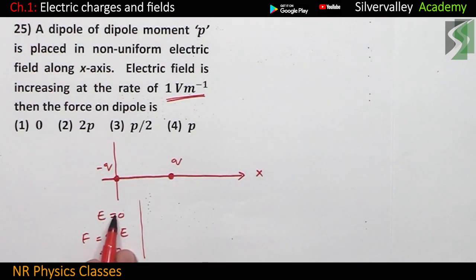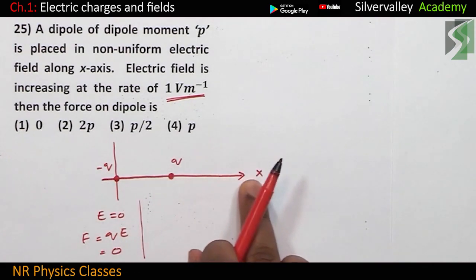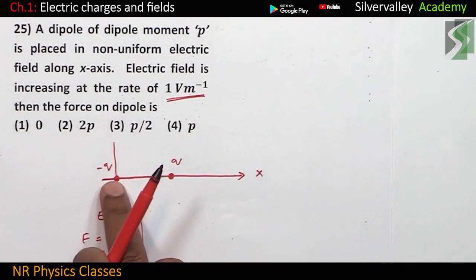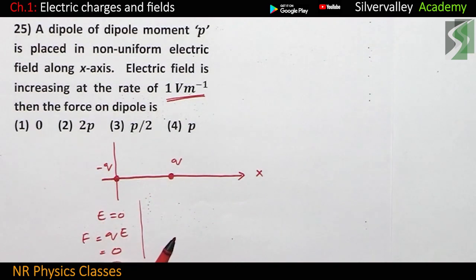Hope you understand this. Hope you understood this. If electric field is 0, then along x-axis electric field increases at this rate. Therefore, force on minus q is 0.